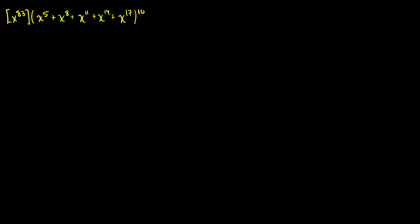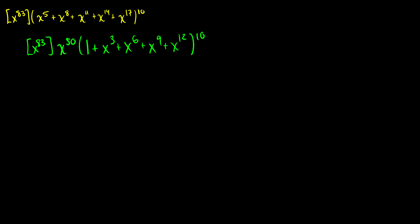The first thing I want to do is extract x^5 from each term. We're pulling x^5 out 10 times, so we find the coefficient of x^83 in x^50 times (1 + x^3 + x^6 + x^9 + x^12)^10. Because we have x^50 pulled out, we can shift our equation: this is equivalent to finding the coefficient of x^33 in (1 + x^3 + x^6 + x^9 + x^12)^10.